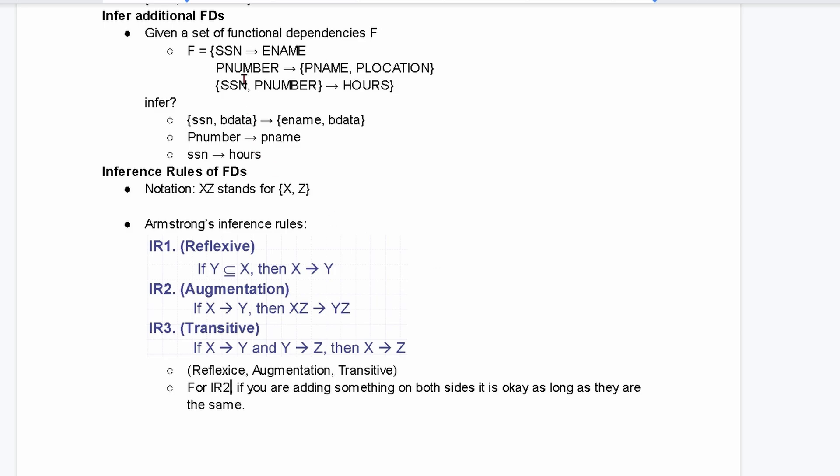So, let's look back at this. We have our social security number and our E name. Well, what can we do? If we want to, we can infer an augmentation. And this augmentation says if we add a B date, or birth date data, to both sides, that is okay. That's augmentation.